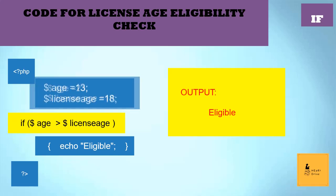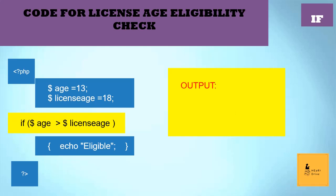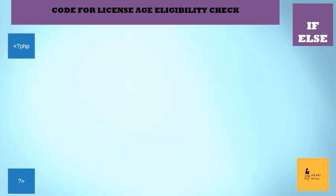If I change my age value to 13, there won't be any output as I have not mentioned what to do when my condition fails. Now, I wish to get not eligible as output if the given person's age is less than 18. In such cases, I can use the if-else statement.